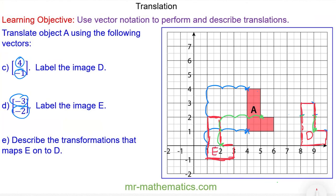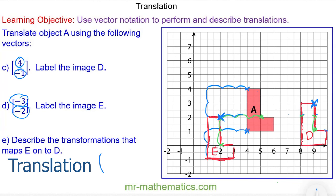Now try to describe the transformation that maps E onto D. Pause the video and resume when you're ready. The first thing to note is that it is a translation, and the vector goes from E to D. Picking a vertex on E and matching it to D, the movement is to the right — so it is positive — 7 units, and 1 unit up. So the vector is (7, 1).